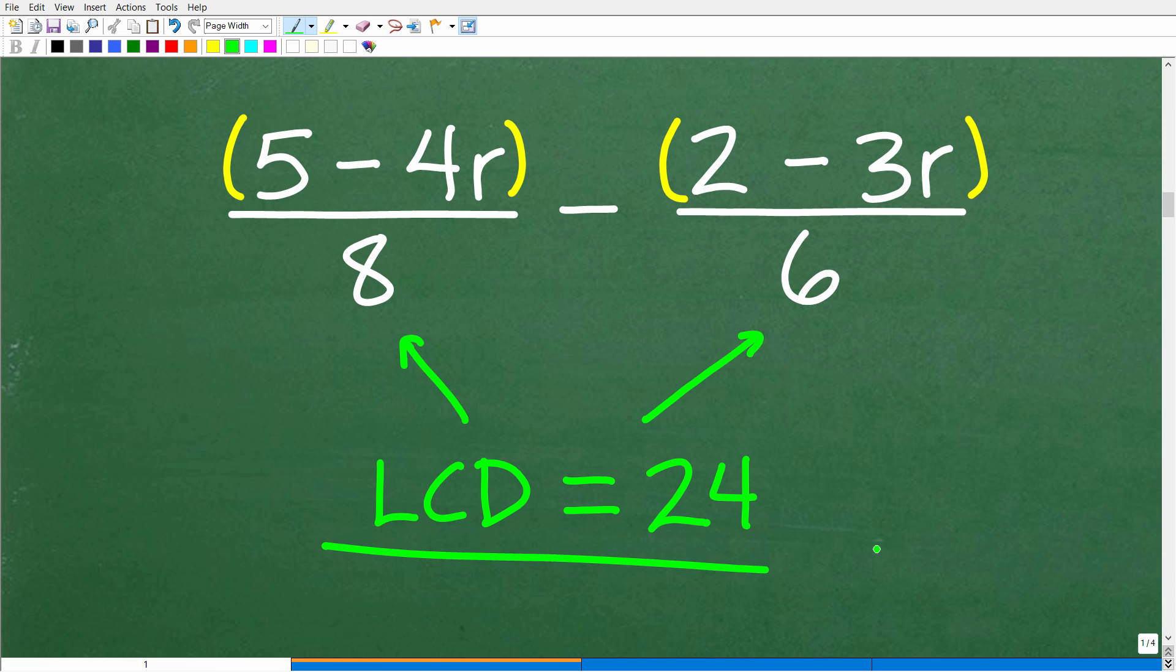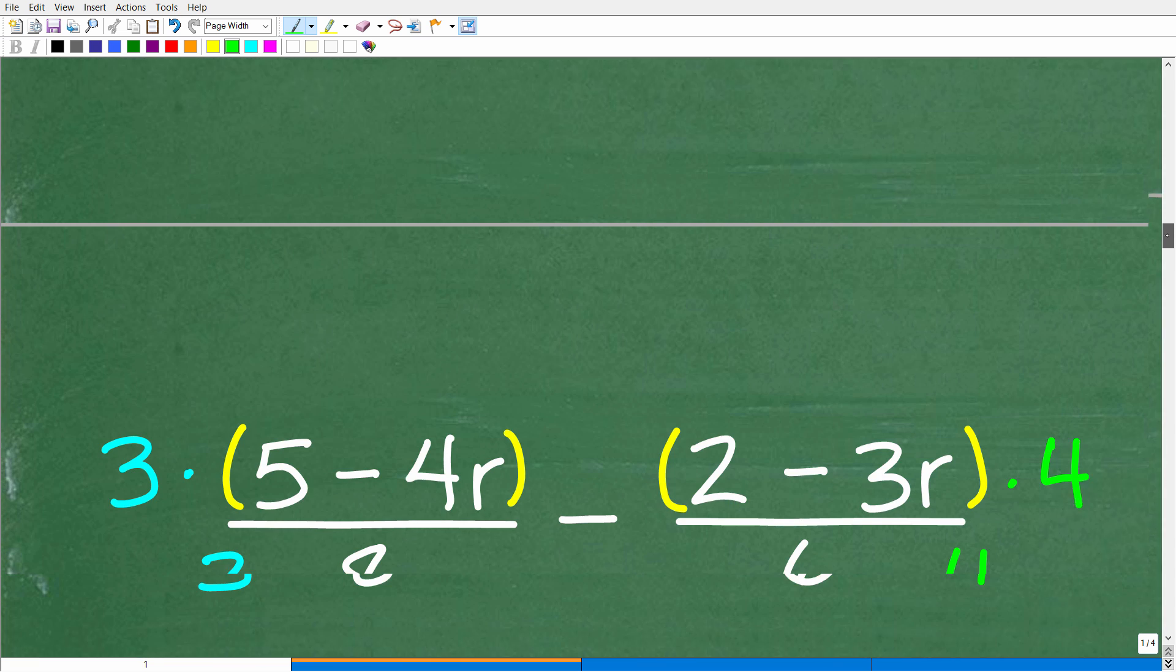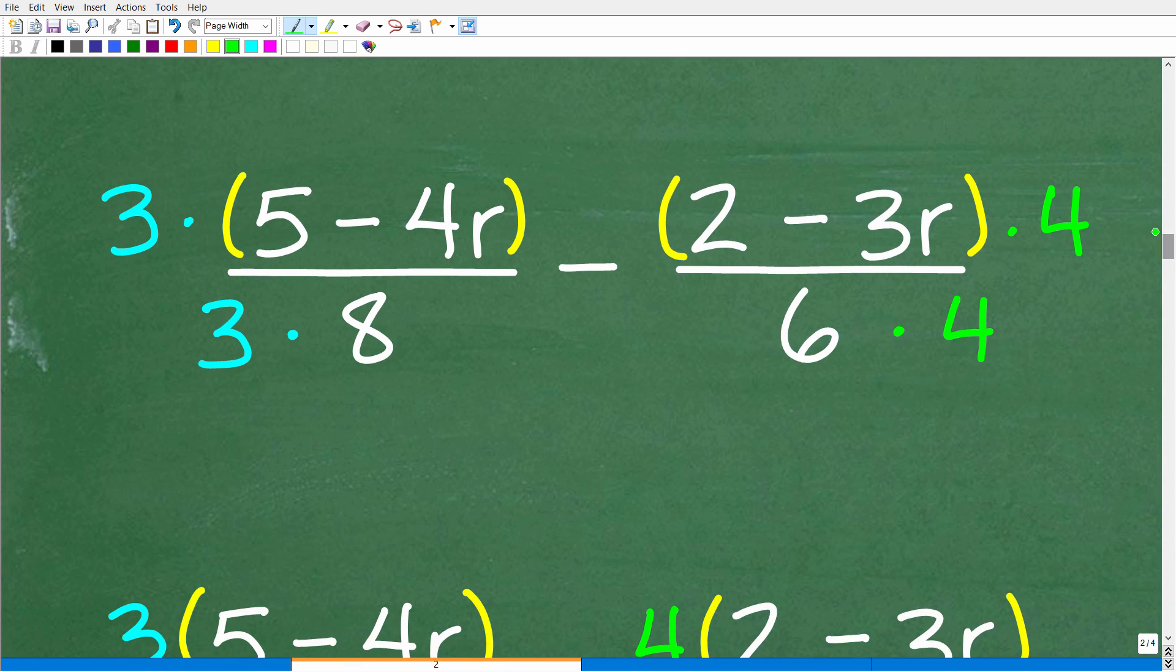So that is the lowest common denominator. So we need to change both of these denominators to 24. Let's go to do that right now. So how do we change an eight into a 24? Pretty easy. All we have to do is multiply by three, which means we also have to multiply the numerator by three. And how do we change a six into a 24? Just multiply by four. But remember, we also have to change the numerator by multiplying by four as well.